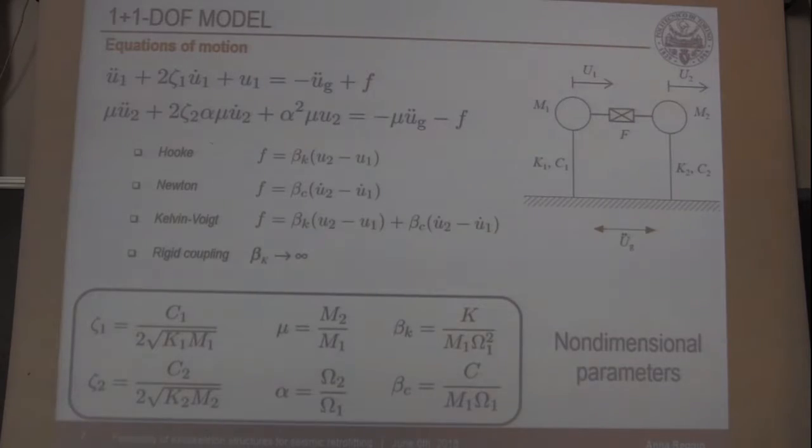In the most general case of viscoelastic coupling, the independent parameters that are derived from the equations of motion written in non-dimensional form are six, and they are in particular two damping ratios, one for the main structure and one for the exoskeleton, the mass ratio and frequency ratio between the two subsystems, and the parameters that describe the mechanical behavior of the coupling device in terms of stiffness and damping.